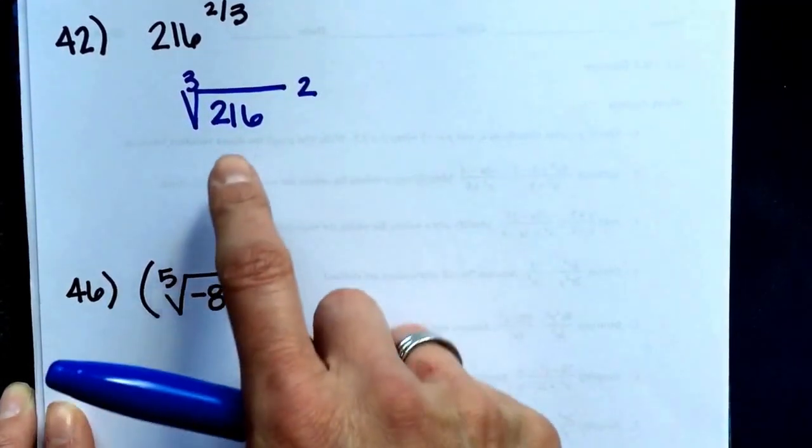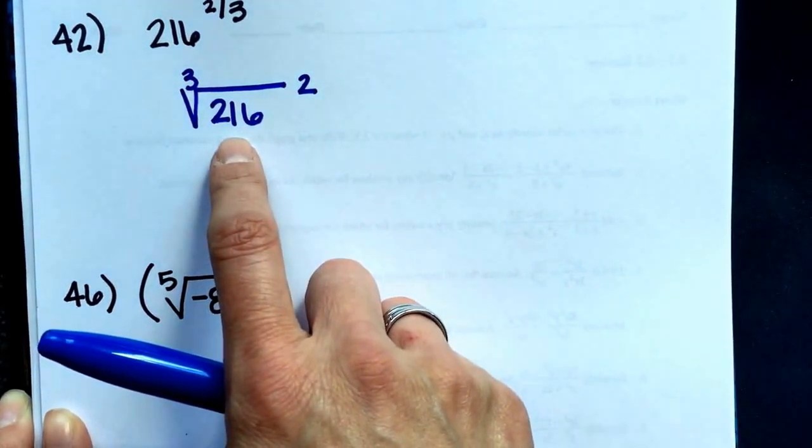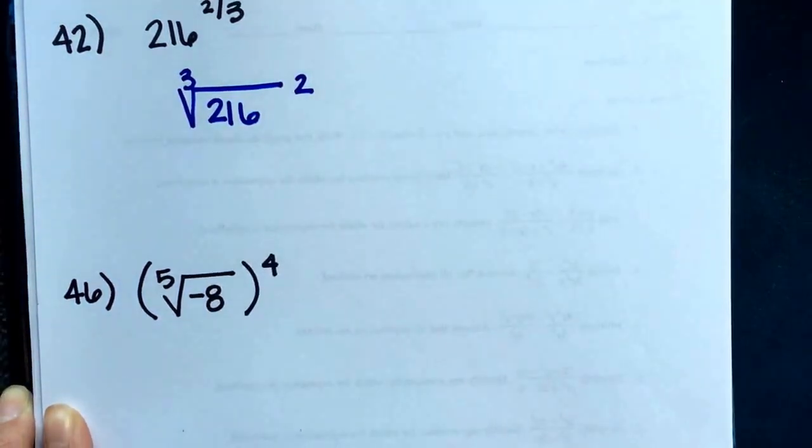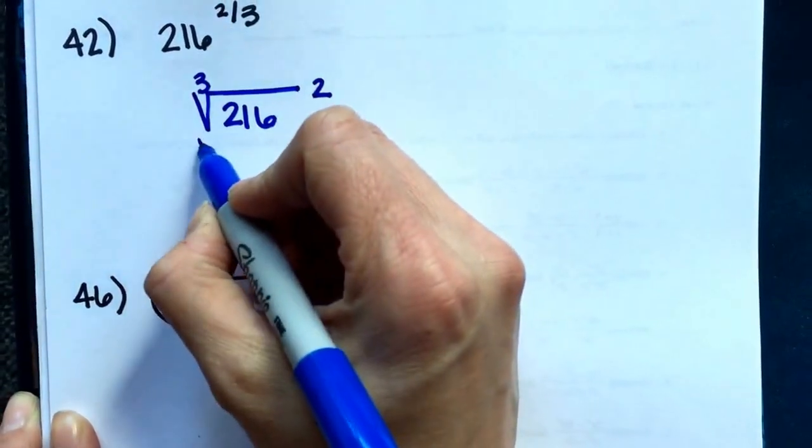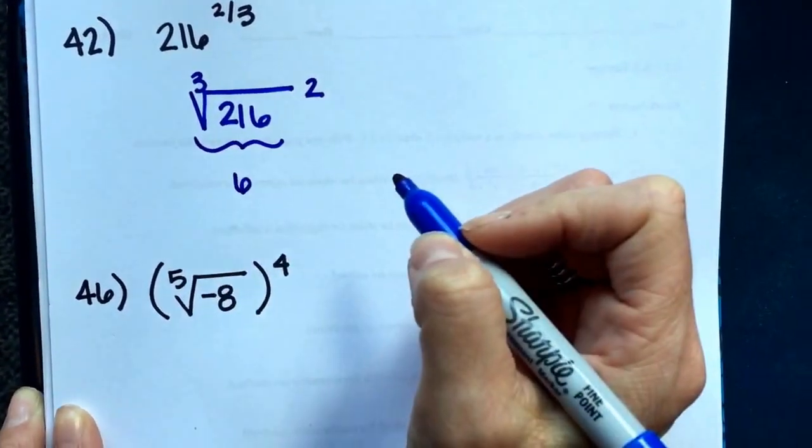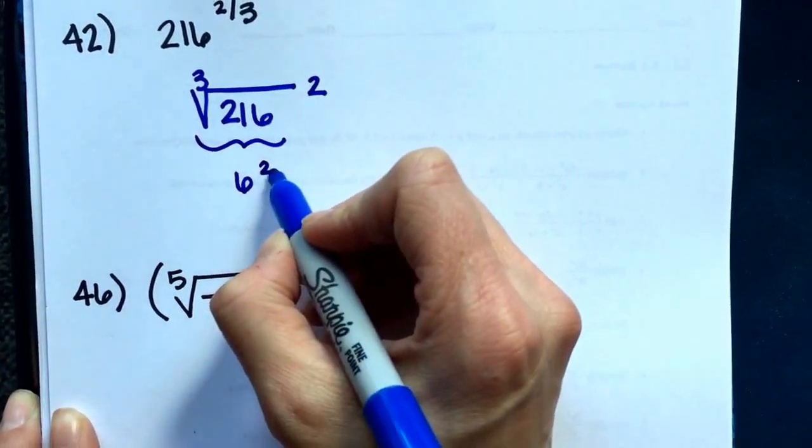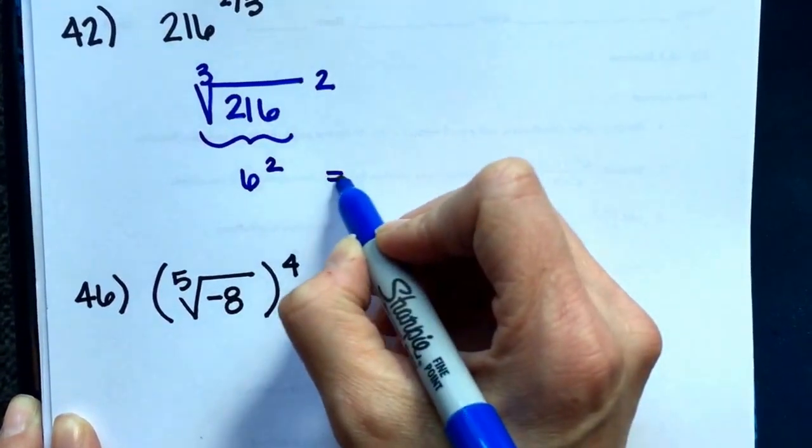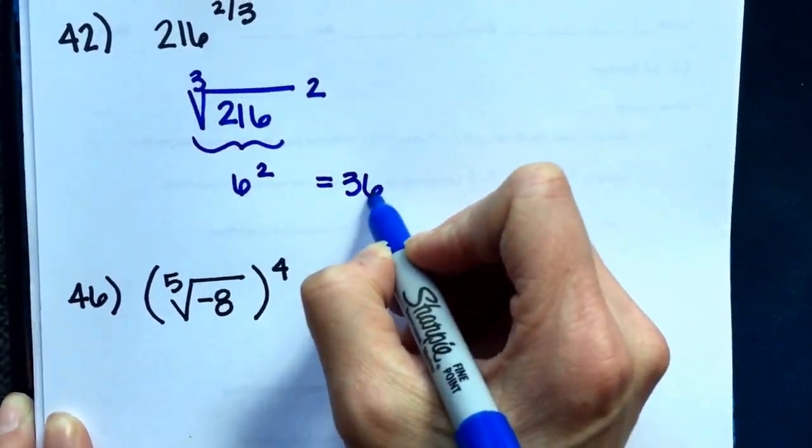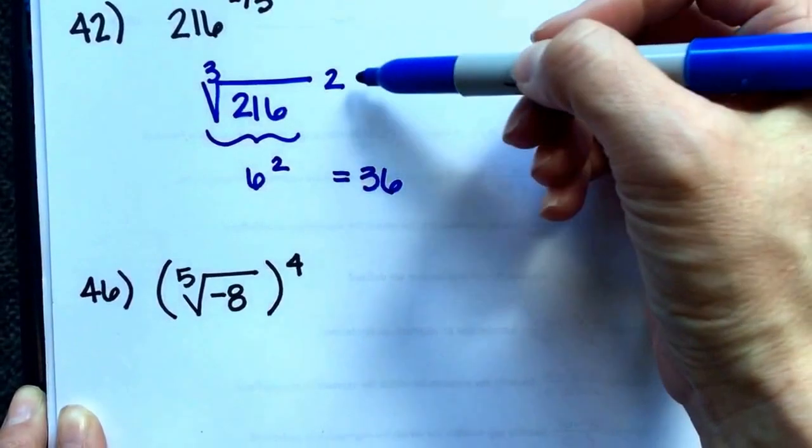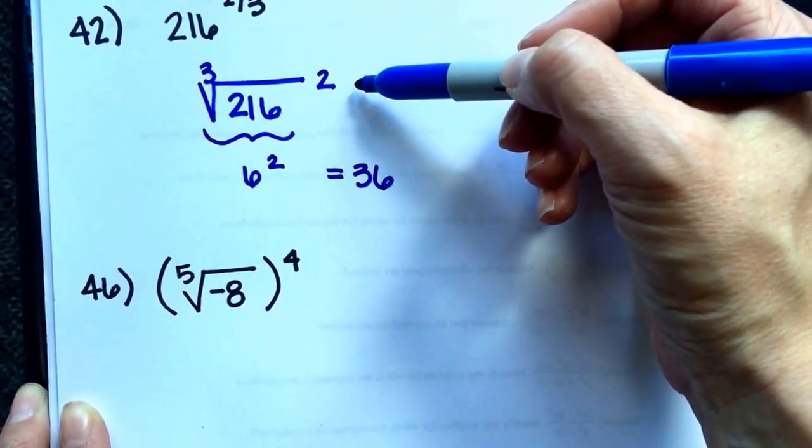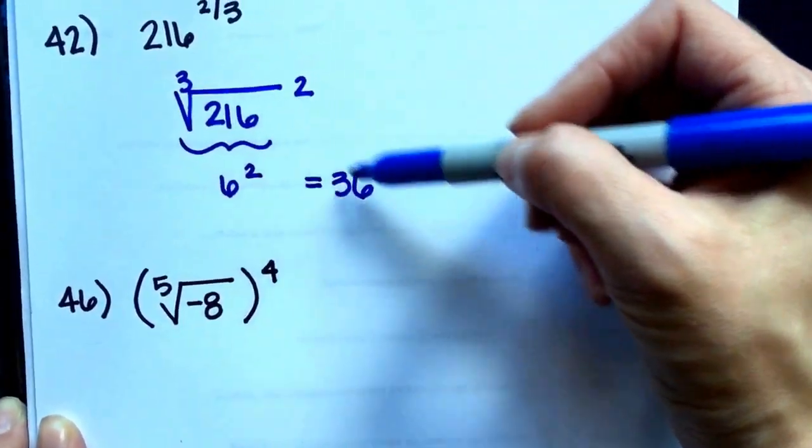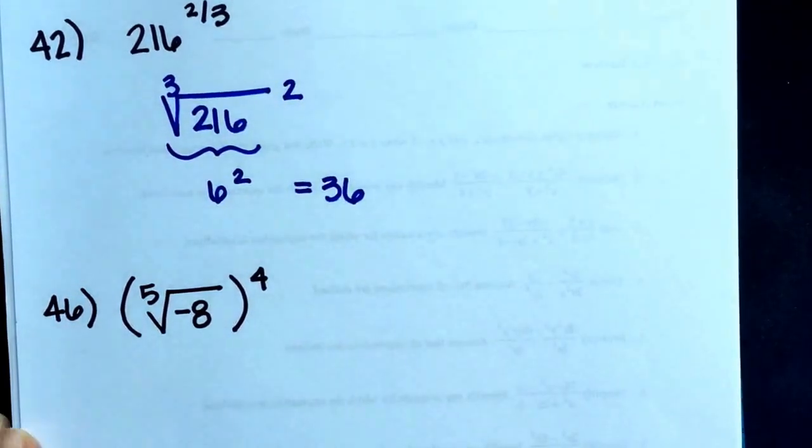This one ends up being 6. 6 times 6 is 36, times 6 again is 216. So this is 6, and then I still have to square it. 6 squared is 36. So it's a two-part problem. They want you to rewrite it with a radical, that's this part right here, and then simplify it. It simplifies to 36.